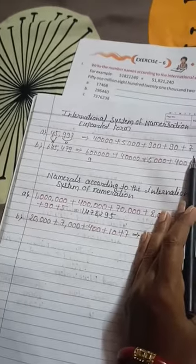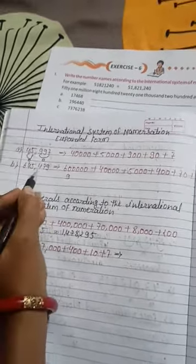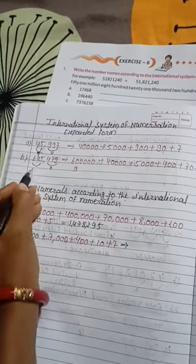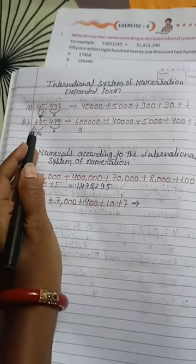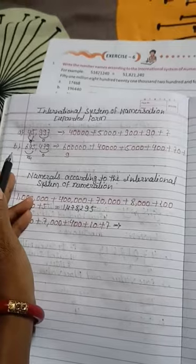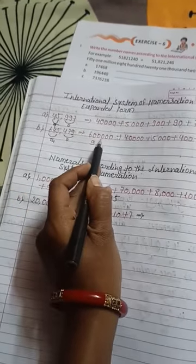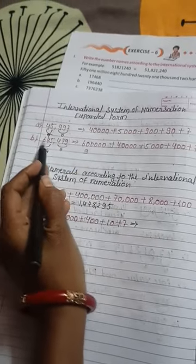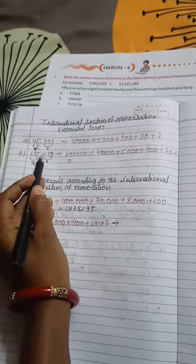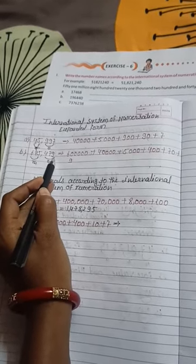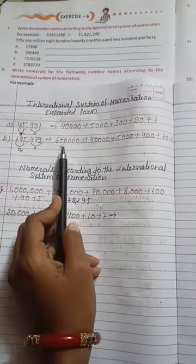Second example: 645,479. The ones period is 479 and the thousands period is 645. This number also involves millions. For place value of 6: after 6 there are five digits, so the place value is 600,000. Then 4 has four digits after it — 40,000. Then 5 with three zeros — 5,000. Continuing similarly for 4, 7, 9.